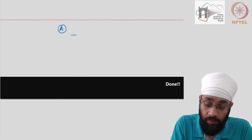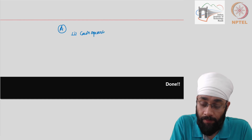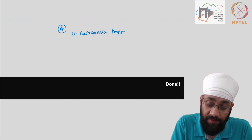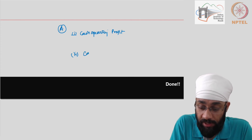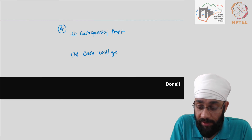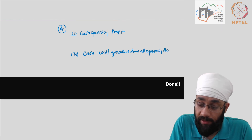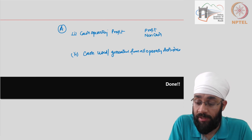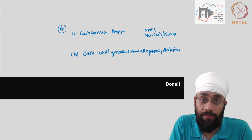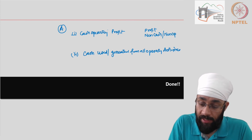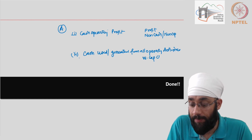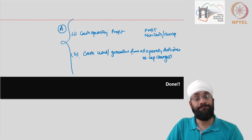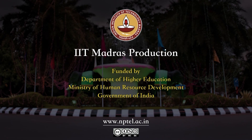That is how you calculate cash flows from operating activities. There are two sub-sections in this first section. In the first sub-section you look for cash operating profit — you consider the profit during the year and adjust for non-cash items and non-operating items, which can be either incomes or expenses. In the second sub-section you consider the working capital changes to arrive at cash generated from all operating activities.